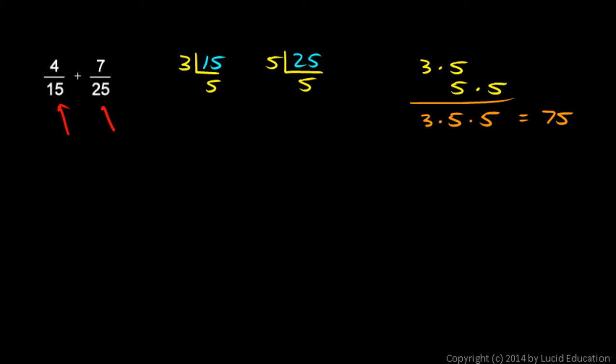That means I need to take each of these fractions and write them with a denominator of 75, and then I'll be able to add them easily. So 4 over 15 is equivalent to some fraction with the denominator of 75. 15 times what is 75? 15 times 5 is 75, so I also have to multiply the numerator, the 4, times 5, and that gives me 20.